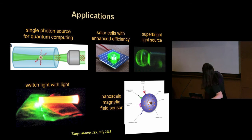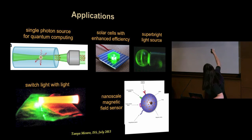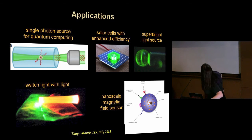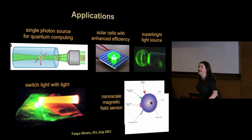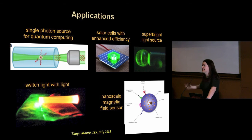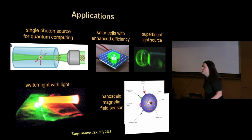Some of the reasons we want to do this: you can do nonlinear optics with it, use light to control light, conceive of making solar cells with enhanced efficiency, and create super-bright light sources. This is one example of a little bead of glass at the tip of a fibre which is in itself a laser — the gain medium, the thing that causes the energy to increase, is the diamond emission itself.